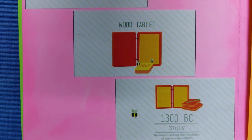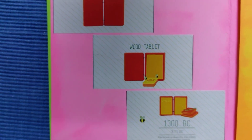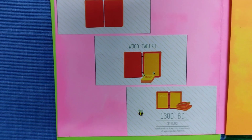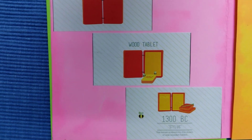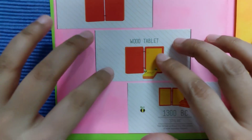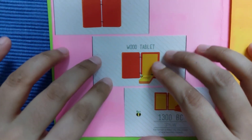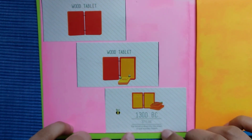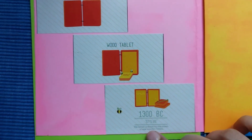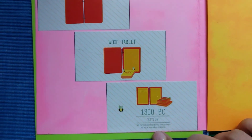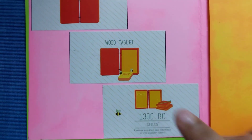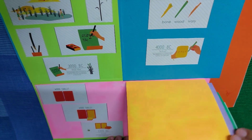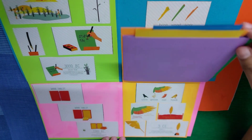The Romans inscribed into thin sheets of wax on wooden tablets. It is a wooden tablet in which wax is present, and the Romans would inscribe into these thin sheets of wax on the wooden tablets.